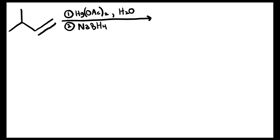Here we have an oxymercuration-demercuration reaction. The way that we know this is oxymercuration-demercuration is because we're reacting a double bond or an alkene with Hg(OAc)₂ and some sort of solvent like water or alcohol. Then in the second step, we have sodium borohydride.